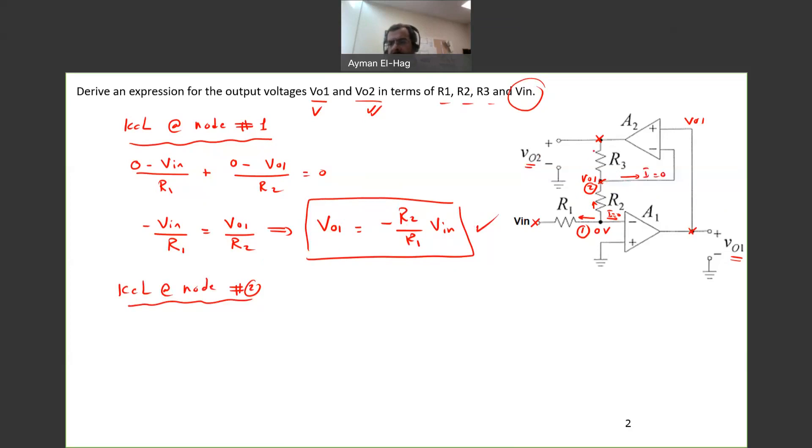So we'll have a current going up and the current going down. As we always do, we ignore the directions of the currents in the previous step. So the current that goes up, it is VO1 minus, the voltage here is VO2 divided by R3.